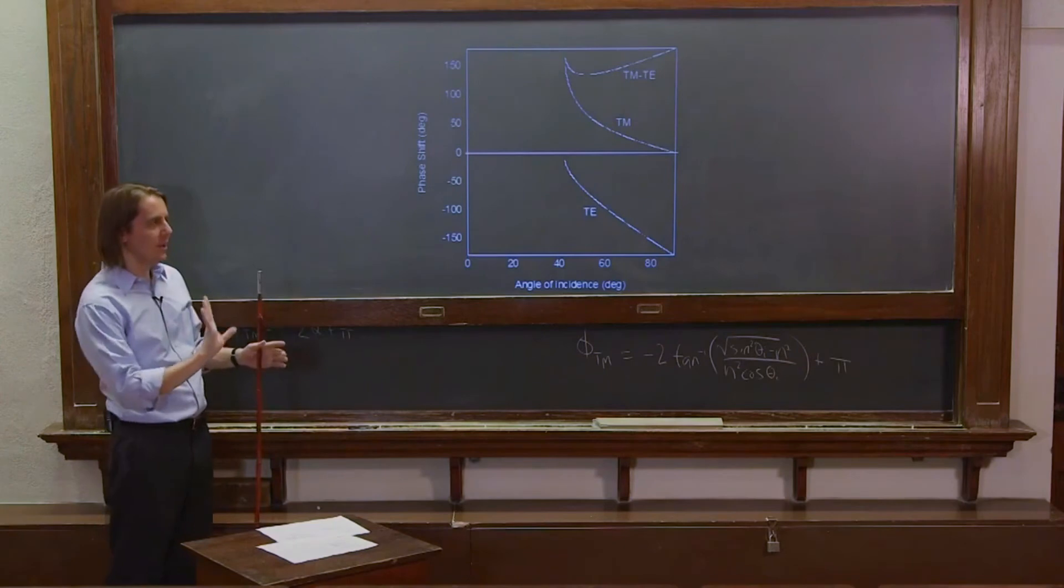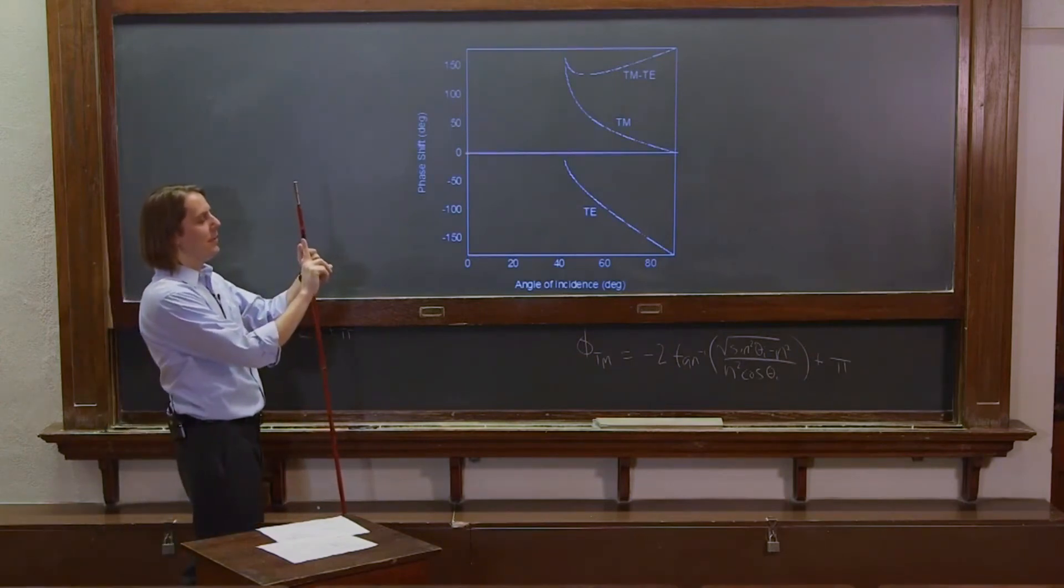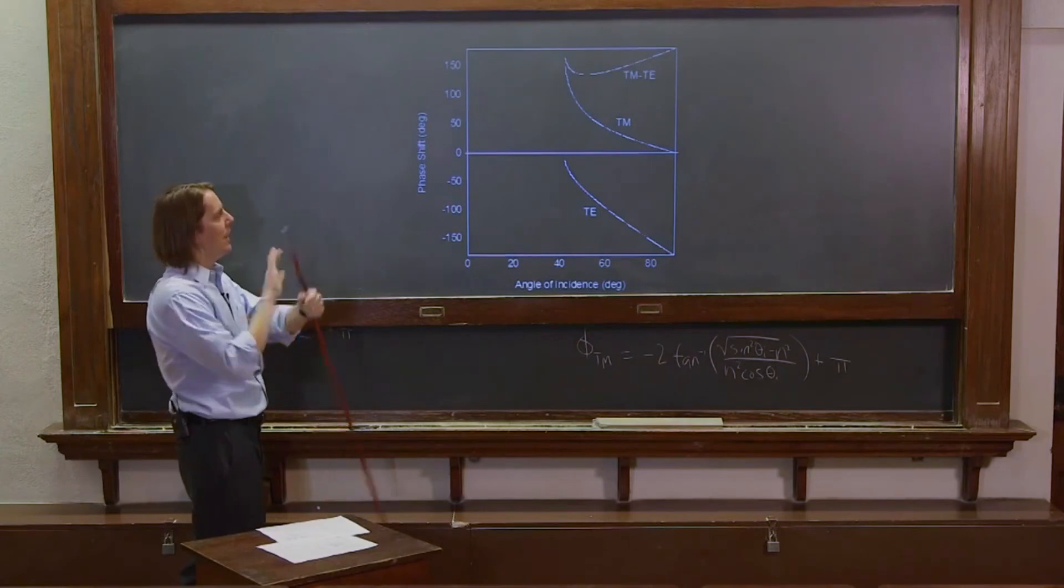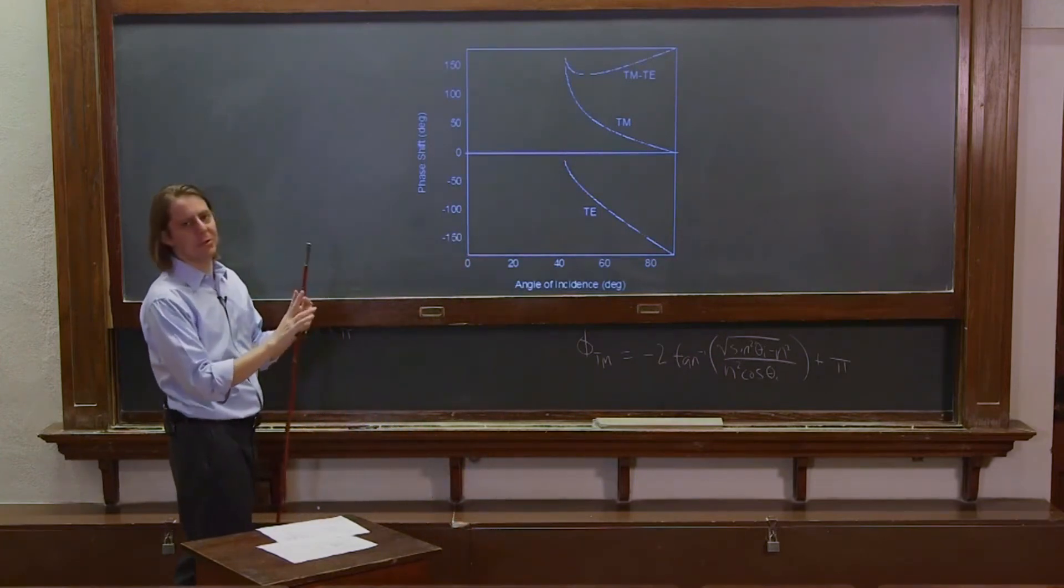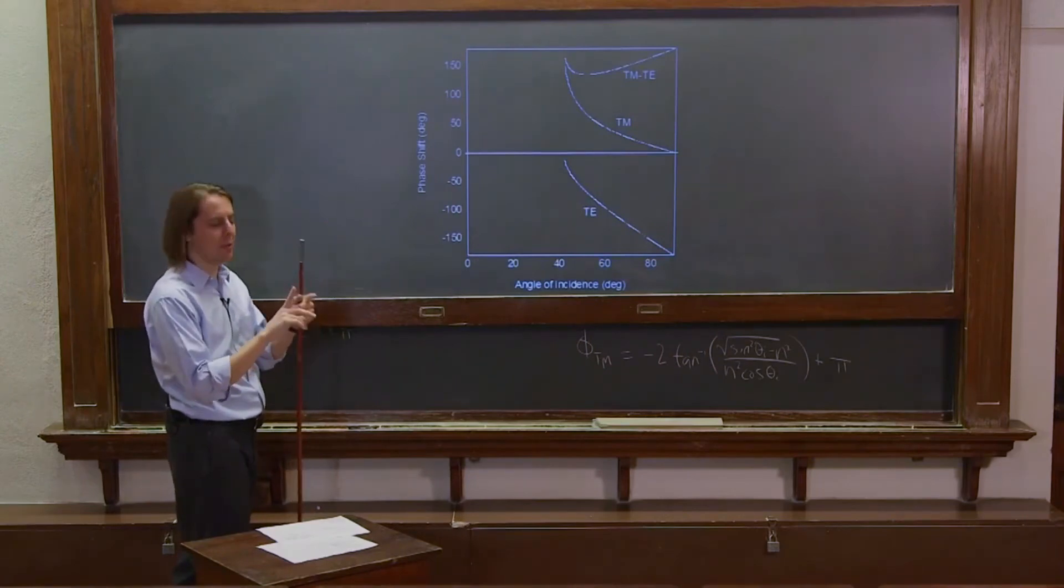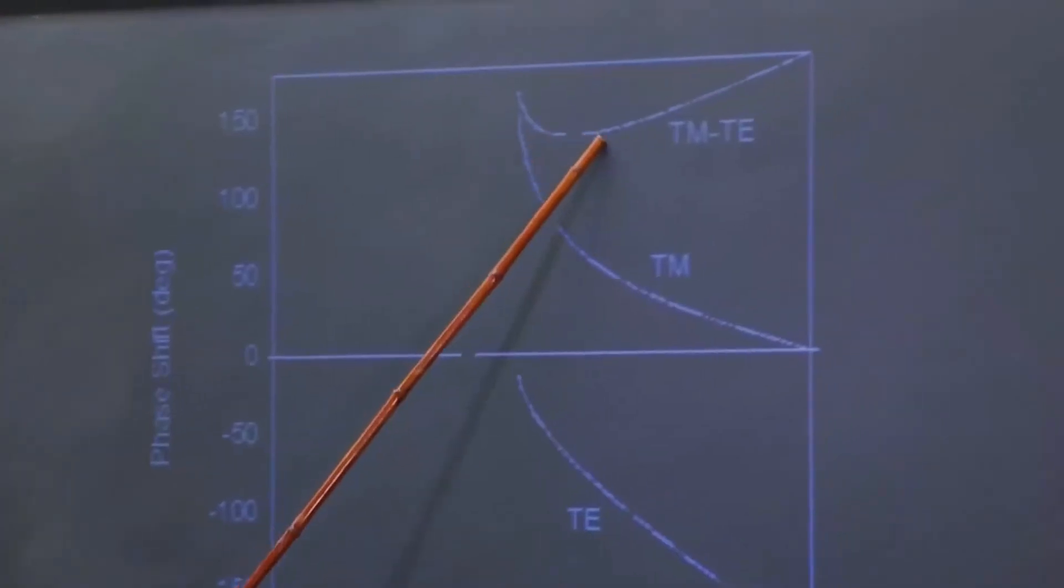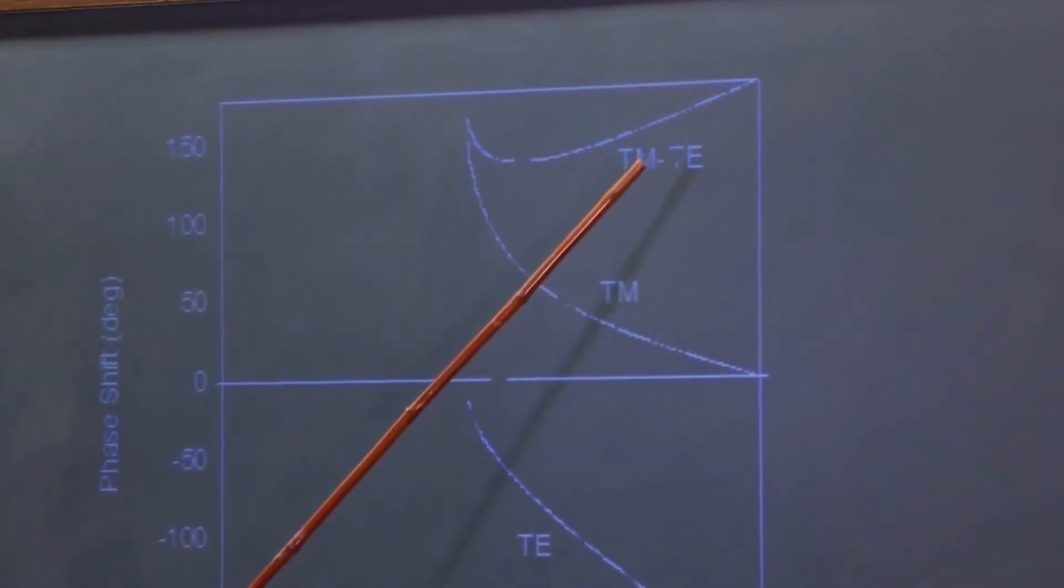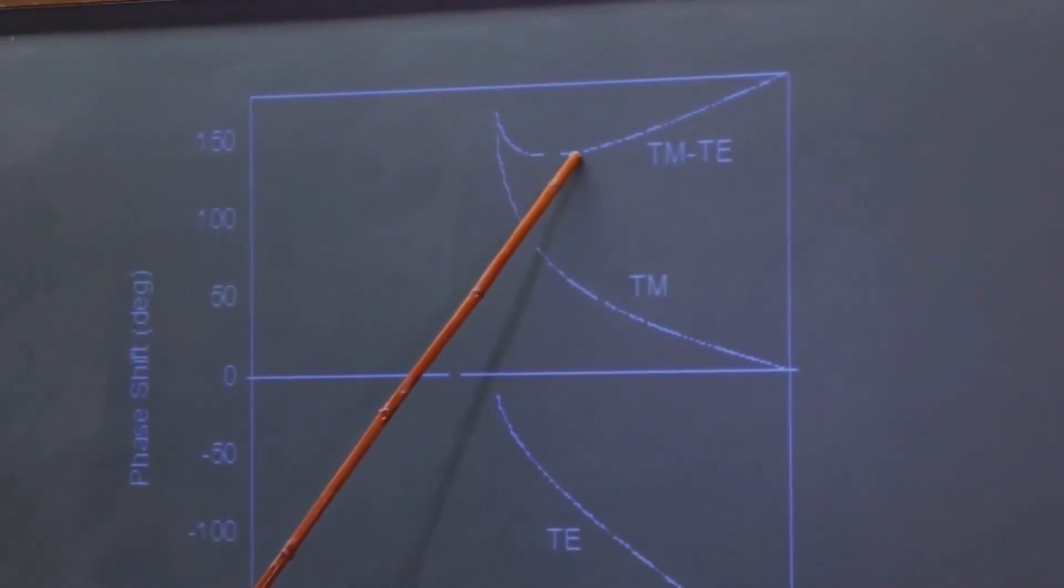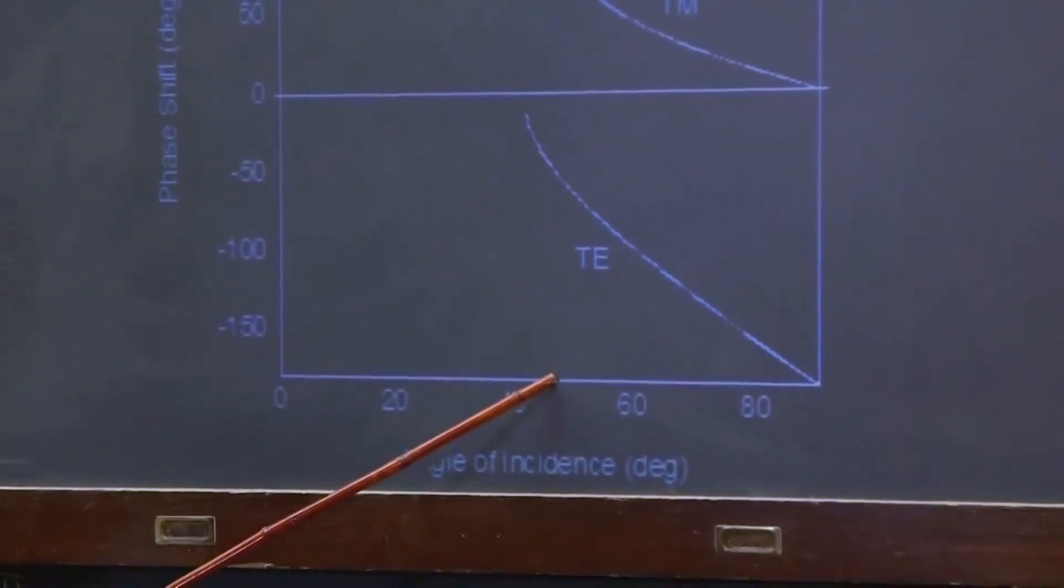What you really care about is the difference between phi TE and phi TM. If you have light internal reflecting and it's got two components, TE and TM, they're going to have some phase relationship. And this is what's going to happen to their phase. What you really care about is their relative phase relationship. How does, what's the difference in phase? So if they were in phase before they were linear, what's their phase relationship now? So for that, you actually care about phi TE minus, phi TM minus TE, or TE minus TM, either way. So here's a plot of TM minus TE.